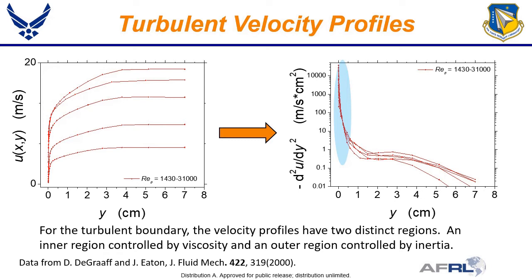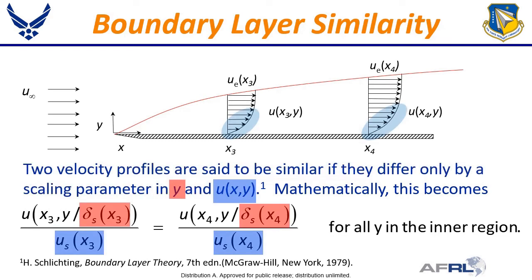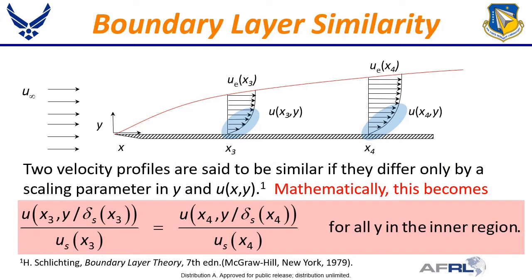The second derivative times the kinematic viscosity gives the viscous momentum contribution in the momentum balance equation. From this, we see the near-wall inner region is dominated by viscosity and that viscosity is basically absent in the outer region. So the question is: what are the scaling parameters that work for the inner region? What we want to know is whether there are scaling parameters that make the scaled velocity profile inner region at x_3 look similar to that at x_4. Two velocity profiles are said to be similar if they differ only by scaling parameters in y and u. Taking the length scale as delta_s and the velocity scale as u_s, the definition of similarity is written as this equation. So the question is: what are the scaling parameters for the inner region?